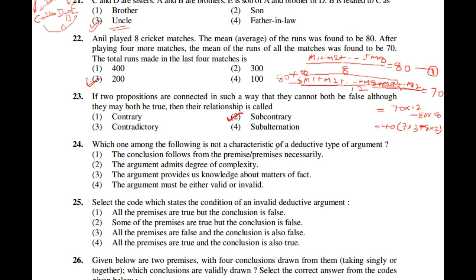Question number 24: Which one among the following is NOT a characteristic of a deductive type of argument? The options are: the conclusion follows necessarily; the argument admits a degree of complexity; the argument must be valid or invalid. The correct option — the one that is NOT a characteristic — is the third one: the argument admits a degree of complexity.